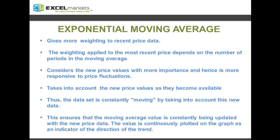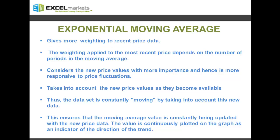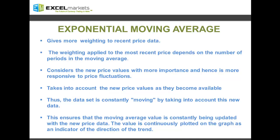Next we have the exponential moving average. The prime difference between the exponential moving average, also known as the EMA, and the simple moving average, is that while the simple moving average gives equal weighting to all price values, the exponential moving average gives more weighting to the recent price values and lesser to the older ones. These weightings depend upon the number of periods in the moving average. Just like the simple moving average, the EMA considers new price values as they become available, so the data set is constantly moving and the value is continuously plotted on the graph as an indicator of the direction of the trend.